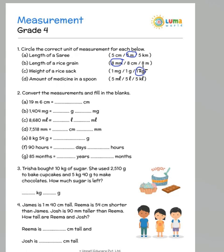Amount of medicine in a spoon would be 5 milliliters. Convert the measurements and fill in the blanks. So we need to understand how to convert 19 meters 6 centimeters into centimeters. 1 meter is 100 centimeters, so 19 meters is 19 followed by 2 zeros plus the 6, which becomes 1906 centimeters. 1404 milligrams is 1 gram because 1000 milligrams make 1 gram, and the remaining is 404 milligrams.